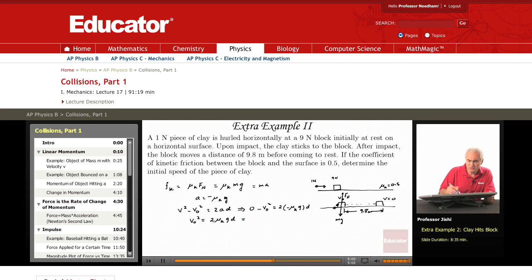Now, this is 2 times 0.5. g is 9.8 and D is 9.8. So this is just 9.8 squared. So V0 is 9.8 meters per second. So the block moves with an initial velocity of 9.8 meters per second.